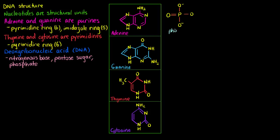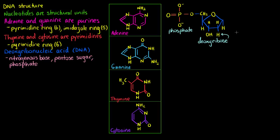Here we have our phosphate component of DNA, and bonding to the phosphate we have our deoxyribose. We call it deoxy because a regular ribose would have another oxygen here — when that oxygen is missing it is deoxy. We can also see that it is a pentose, or five-membered ring. And lastly we have our nitrogenous base, in this case adenine. This is our individual unit of DNA.